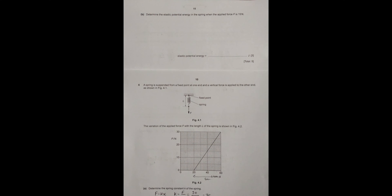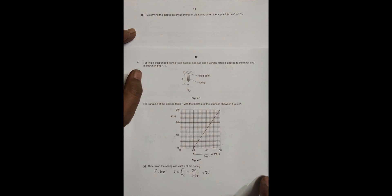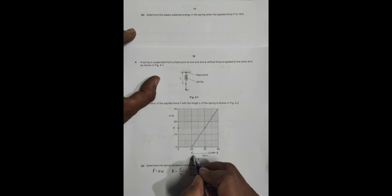Next, determine the elastic potential energy in the spring when the applied force F is 15 newtons. That means our applied force is somewhere here. So 15 is here, and at that time the length is 40. So the extension now is from 20 to 40, which is 20 cm.